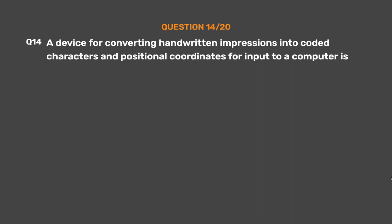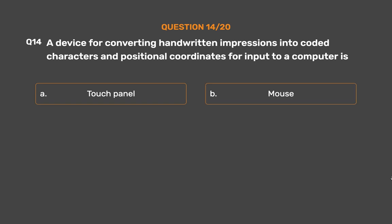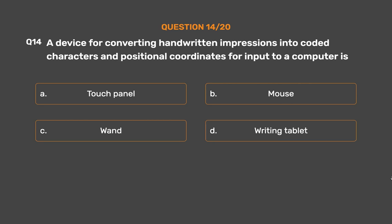Question number 14. A device for converting handwritten impressions into coded characters and positional coordinates for input to a computer is. Option A: Touch panel. Option B: Mouse. Option C: Wand. Option D: Writing tablet.